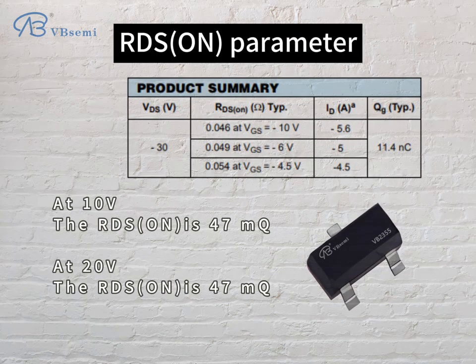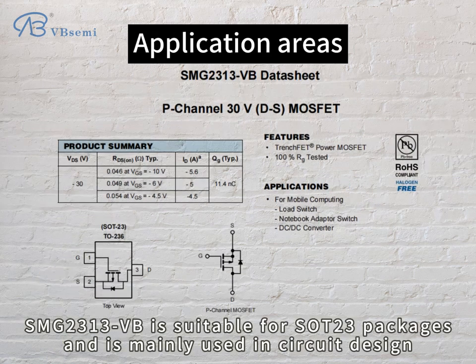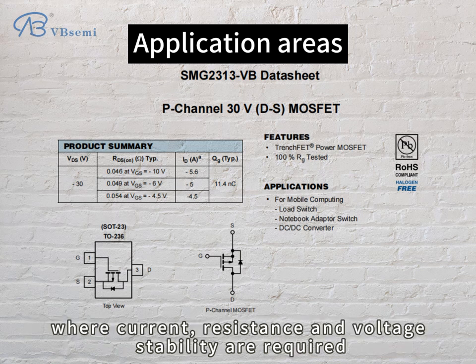RDS(on) parameter: at 10V the RDS(on) is 47mΩ; at 20V the RDS(on) is also 47mΩ. The SMG2313VB is suitable for SOC23 packages and is mainly used in circuit designs where current, resistance, and voltage stability are required.